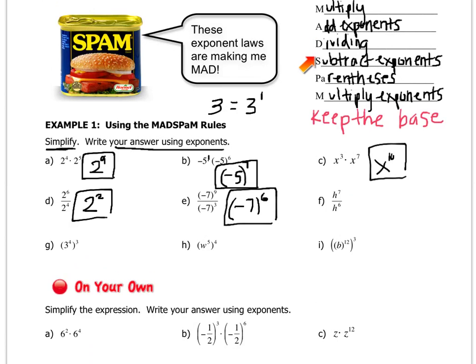Dividing is subtract the exponents, keep the base. So H, and then 7 minus 6 is 1, but even better than that, you can just write H, because you don't need to put the 1.